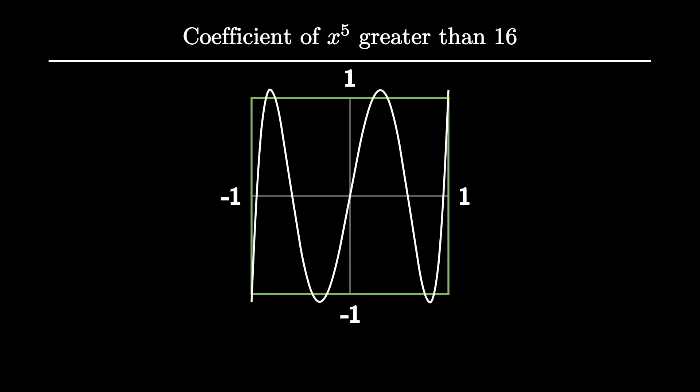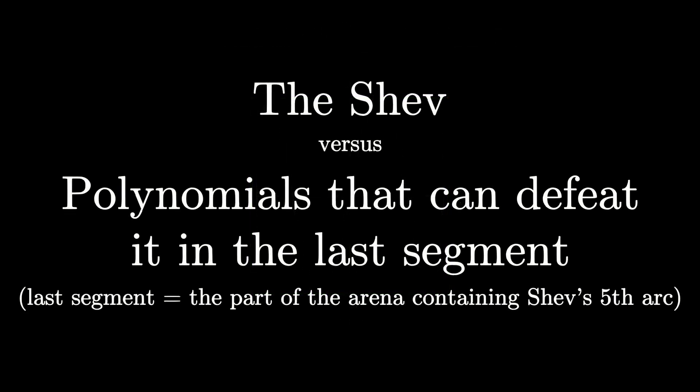What about other potential contestants? Those with degree 5 coefficients at most 16? Can't one of them defeat the chef? The issue gets a bit messier here, and the chef hasn't managed to rule out this possibility completely yet. It has ruled out some special cases though. For example, the potential contestant with slope larger than 25 in the last segment.